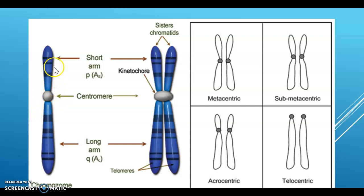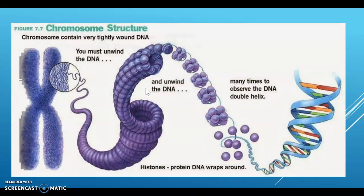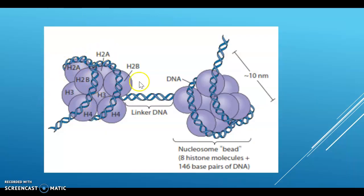The chromosome consists of two chromatids joined by the centromere with the help of a protein called the kinetochore. The proteins that bind DNA to chromosomes are traditionally divided into two general classes: histone and non-histone proteins. The histones are divided into five major types: H1, H2A, H2B, H3, and H4.